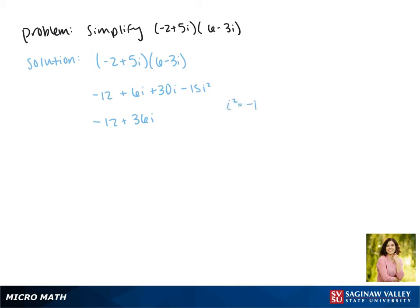i squared is actually negative 1, making our last term a positive 15. Combining 15 with negative 12 gives us 3 plus 36i. And this is as simplified as we can make our expression.